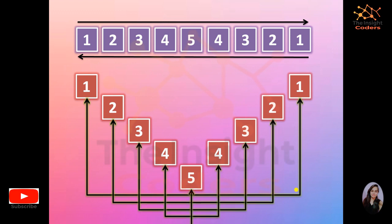Now, where students get confused: say I have a single number like 6, 4, or 8 — is it a palindrome or not? About 50 to 60% of students say no, but the reverse of 4 is again 4. So every single character is always a palindrome. This was the only thing students were getting confused about in this particular question.